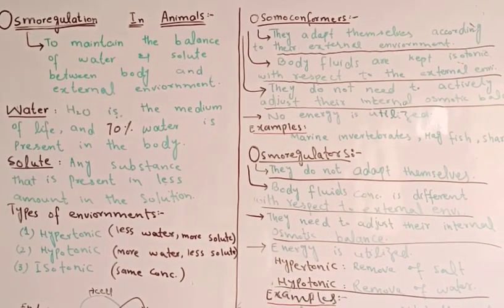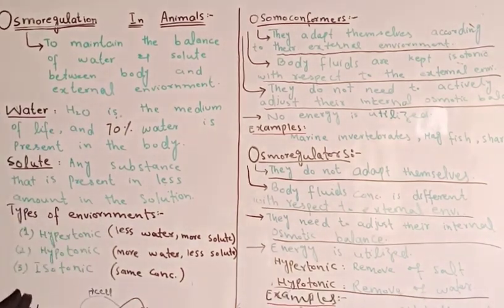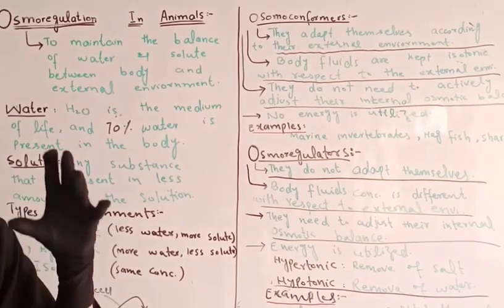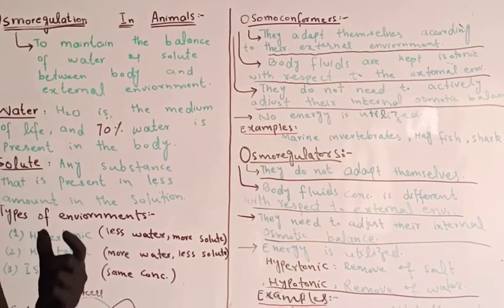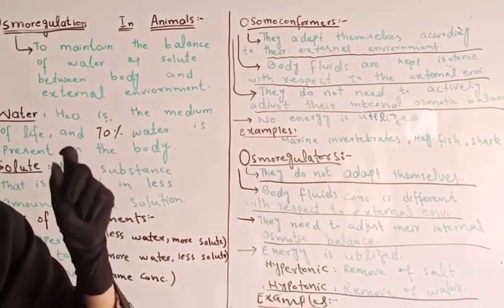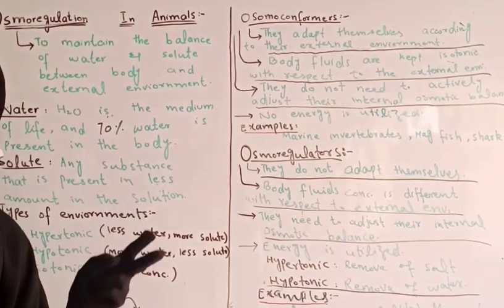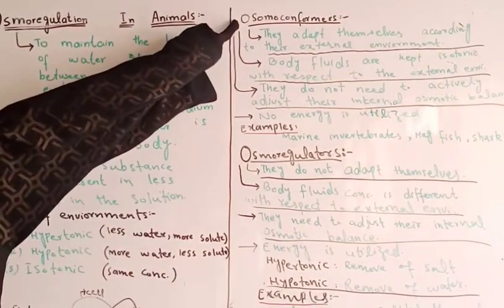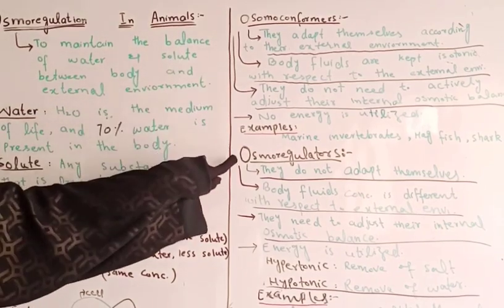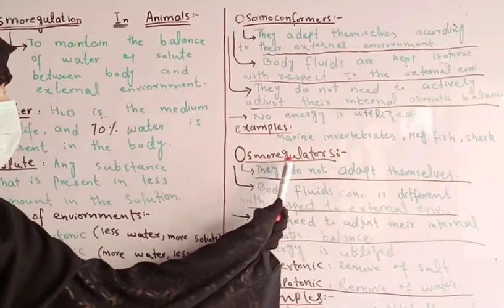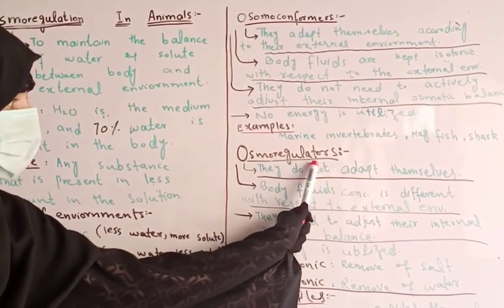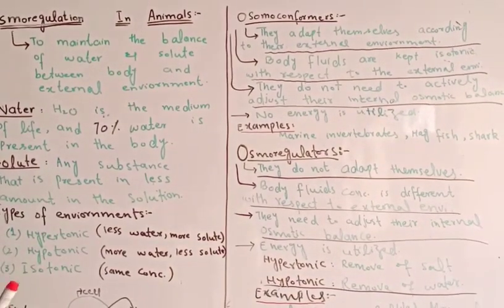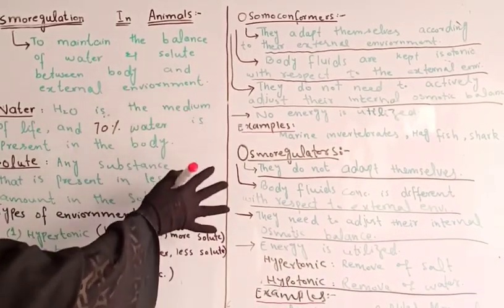We will discuss two types of animals today with regard to Osmoregulation. There are two types: one is Osmoconformers, and the second category is Osmoregulators. These are the two categories. From the names you can understand — regulators will regulate. We will read both step by step and you will know the best difference between them.